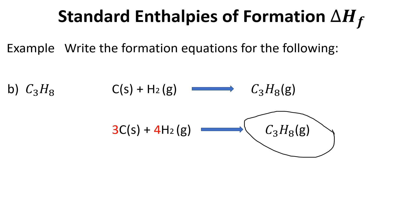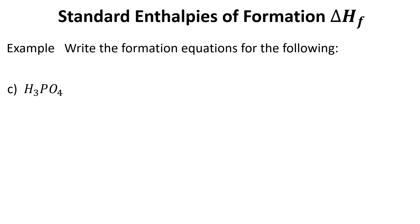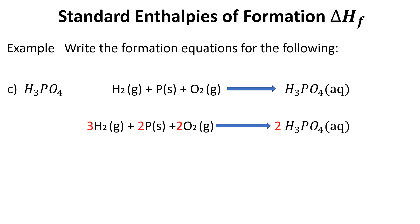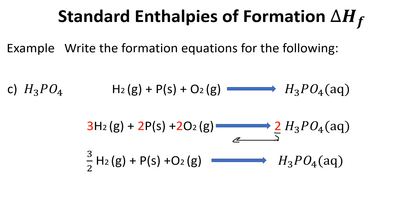A slightly more complex example is phosphoric acid. The equation is a bit bigger than what we're used to. After balancing, we end up with a coefficient of two in front of phosphoric acid, so we divide everything by two to get the equation with one mole of H₃PO₄.